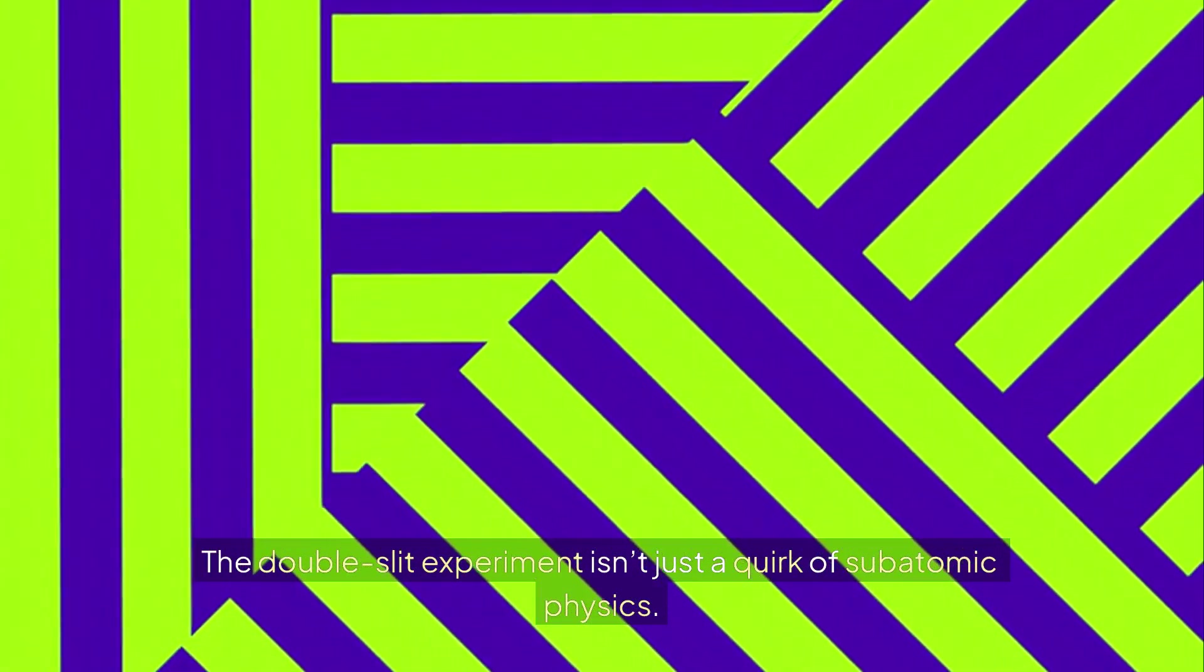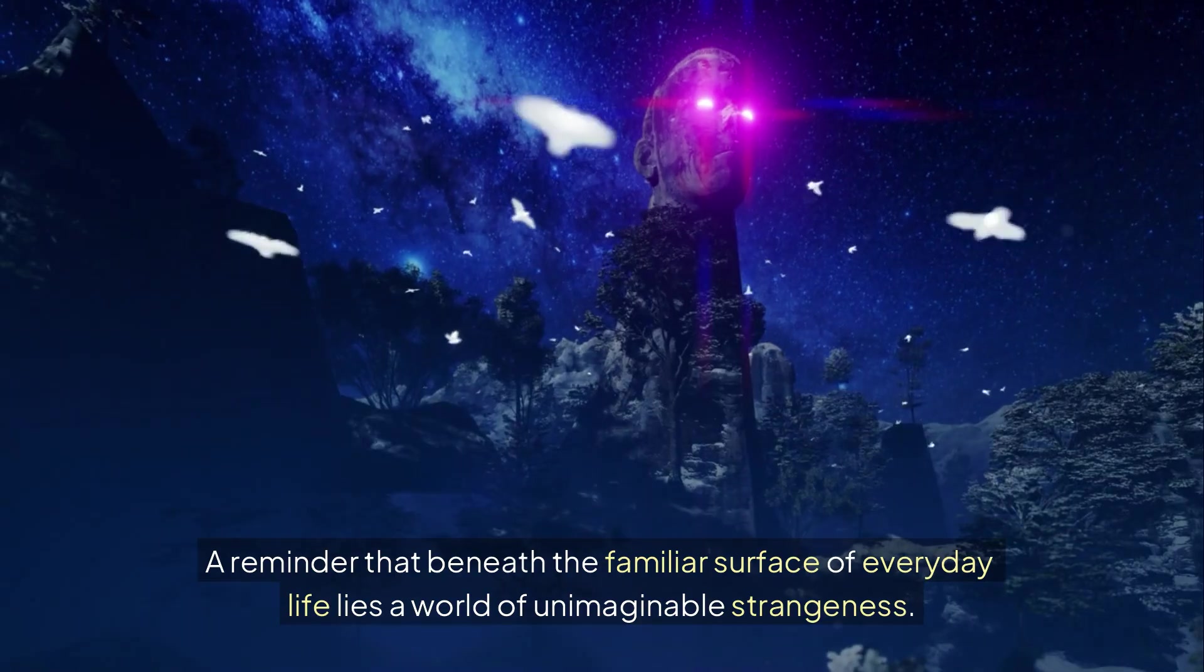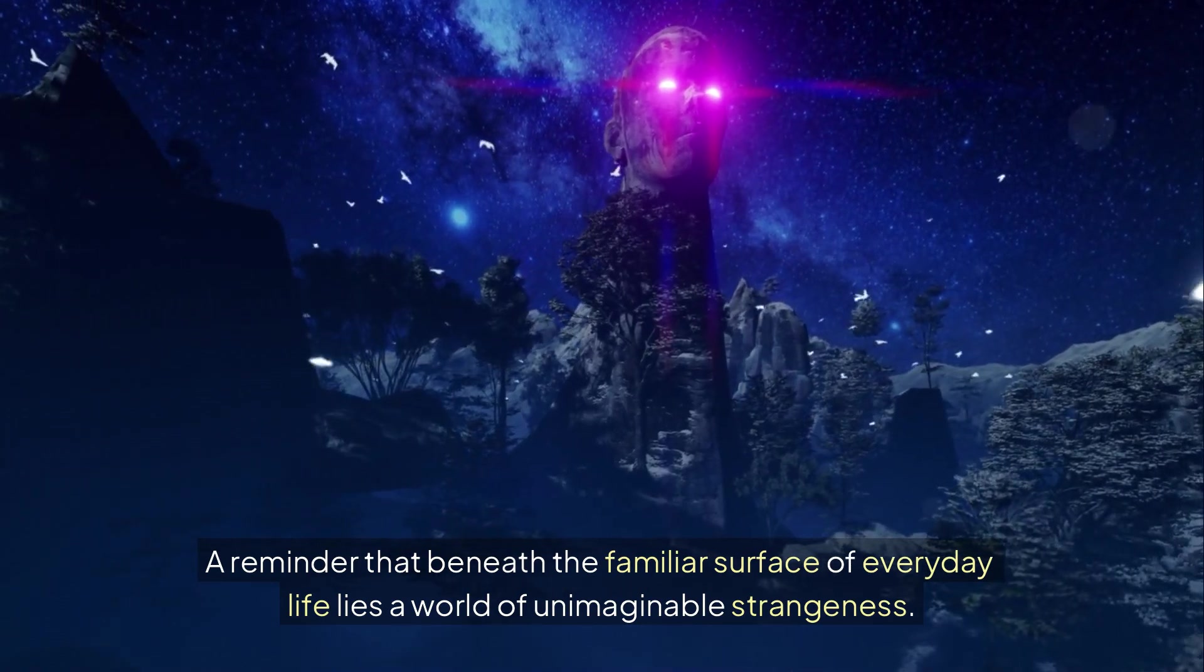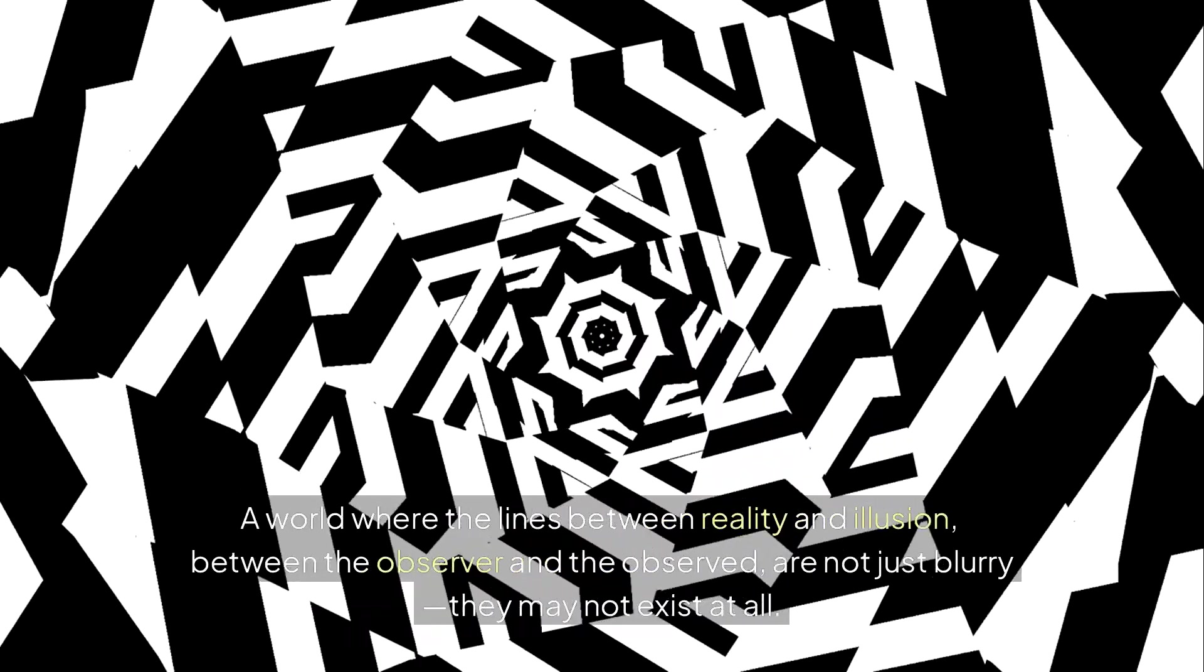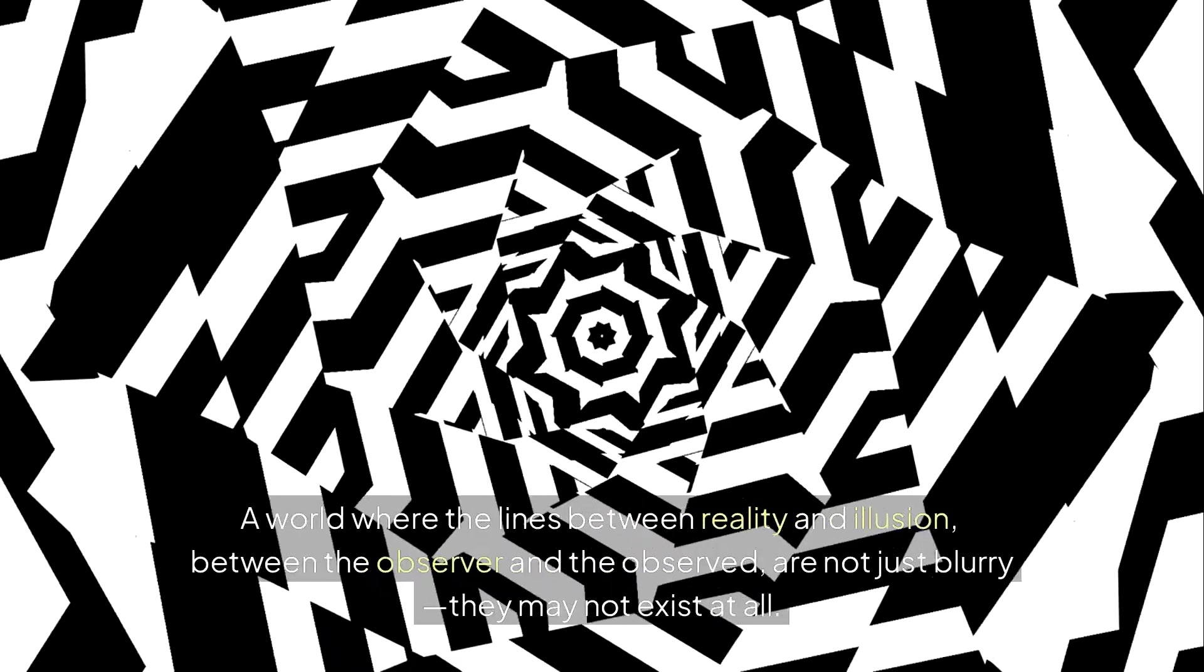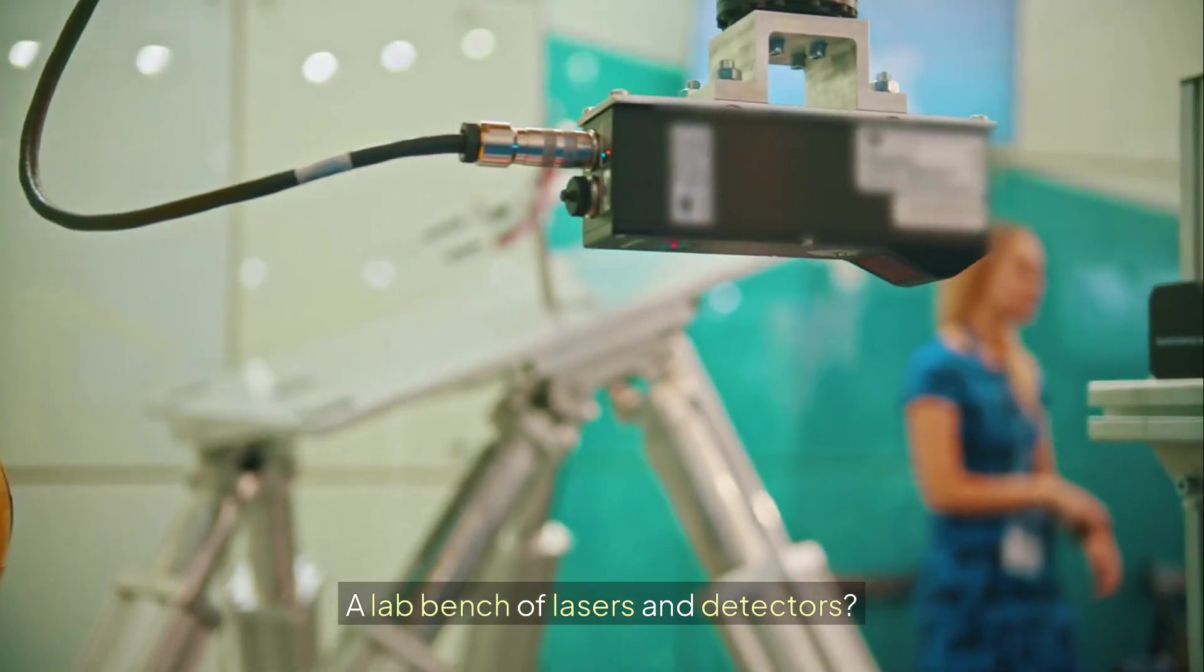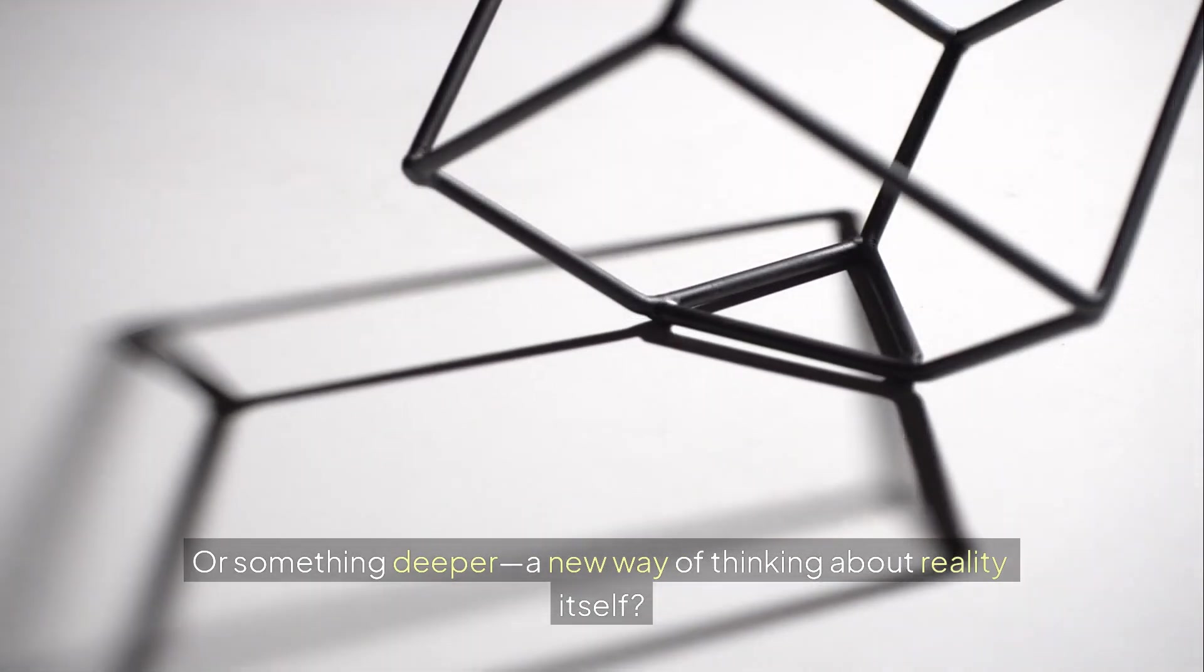The double slit experiment isn't just a quirk of subatomic physics. It's a key. A portal. A reminder that beneath the familiar surface of everyday life lies a world of unimaginable strangeness. A world where the lines between reality and illusion, between the observer and the observed, are not just blurry. They may not exist at all. So where does that leave us? With a chalkboard full of equations. A lab bench of lasers and detectors. Or something deeper. A new way of thinking about reality itself.